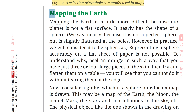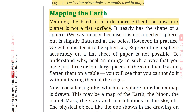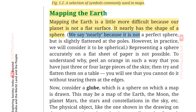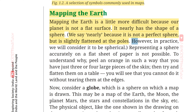Mapping the Earth — प्रिथ्वी का मानचित्रण — is a little more difficult because our planet is not a flat surface. It nearly has the shape of a sphere. इसका आकार लगभग एक गोले जैसा है। We say 'nearly' because it is not a perfect sphere — it is slightly flattened at the poles. However, in practice, we will consider it to be spherical.